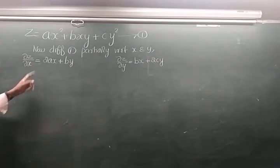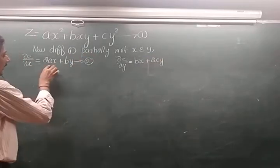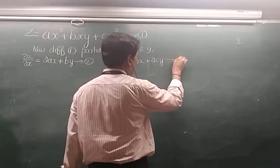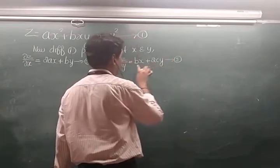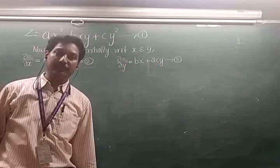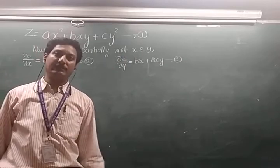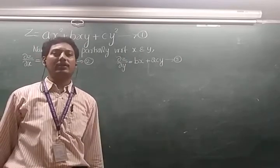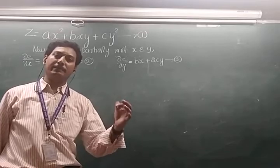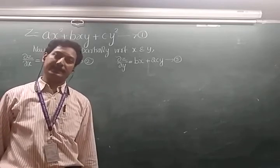From equation 2 we have constants a and b, and from equation 3 we have constants b and c. Eliminating all of a, b, c from just equations 2 and 3 is not possible because there are more arbitrary constants than equations. So we must proceed to second-order derivatives.